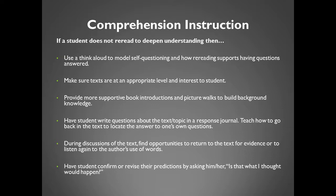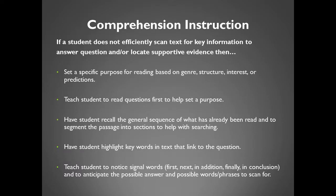If a student does not efficiently scan text for key information to answer a question or locate supportive evidence, then set a specific purpose for reading based on genre, structure, interest, or predictions. Teach the student to read questions first to help set a purpose. Have the student recall the general sequence of what has already been read and segment the passage into sections to help with searching. Have the student highlight key words in text that link to the question. Teach the student to notice signal words — first, next, in addition, finally, in conclusion — and to anticipate the possible answer and possible words or phrases to scan for.